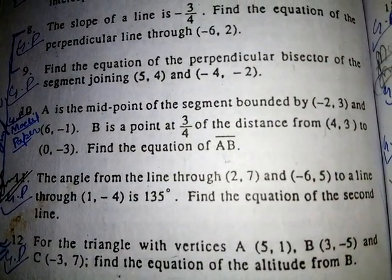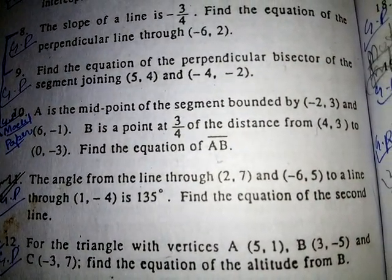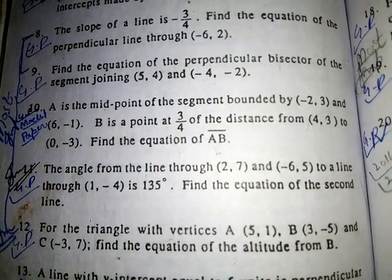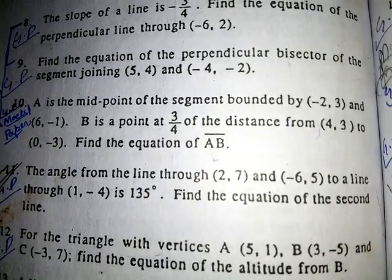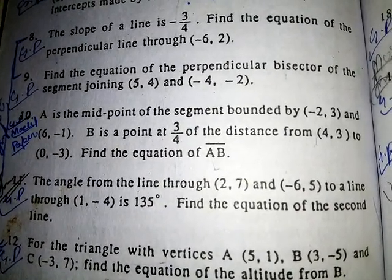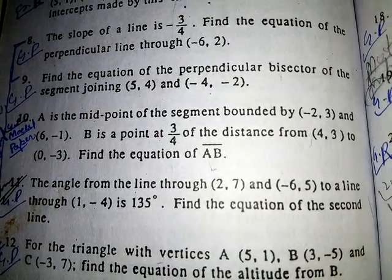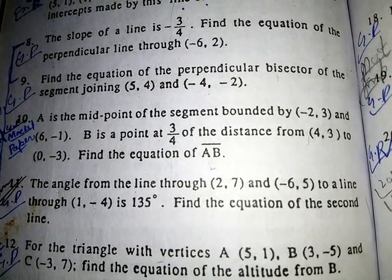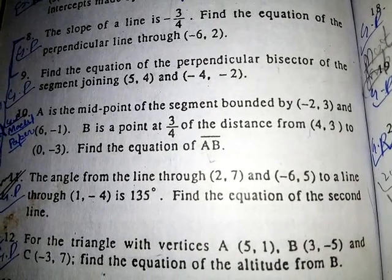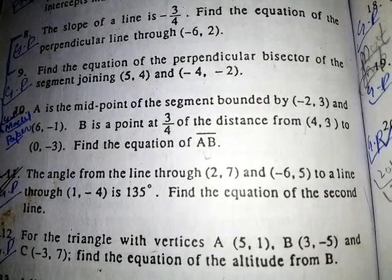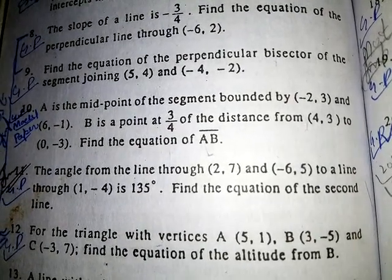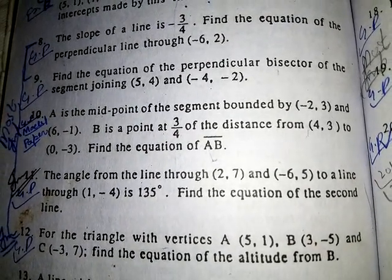Hi friends, welcome to online education. Today we learn Chapter 2, Exercise 2.1, Question 10. A is the midpoint of the segment bounded by (-2, 3) and (6, -1). B is the midpoint at 3/4 of the distance from (4, 3) to (0, -3). We have to find the equation of AB.